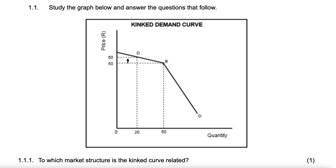We see the demand curve kinks at point B, so that will be the best price. If this oligopoly increases the price, the demand curve at a higher price from where it kinks is highly elastic. A small change in price causes a huge drop in quantity demanded — for example, price goes up from 50 to 60 and quantity drops from 50 to 20.